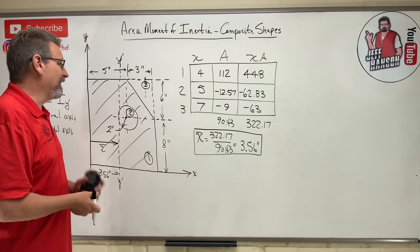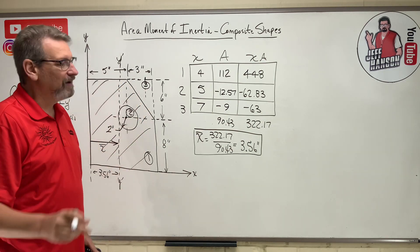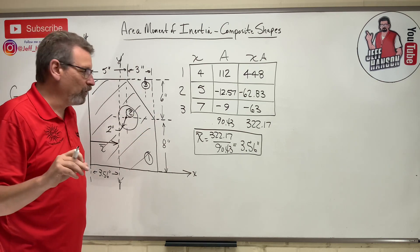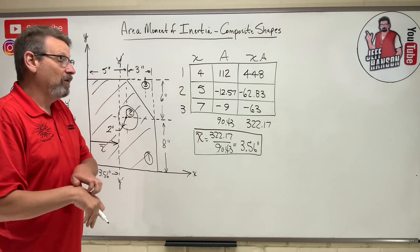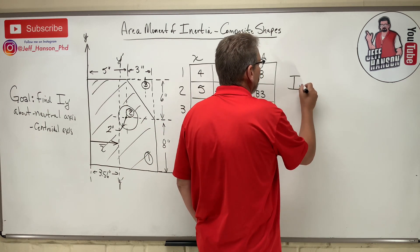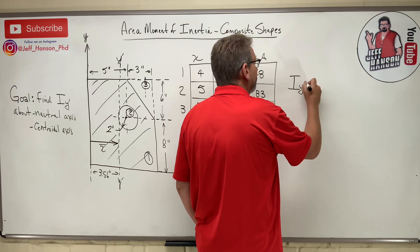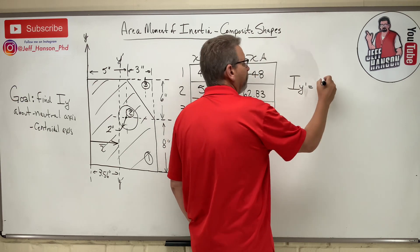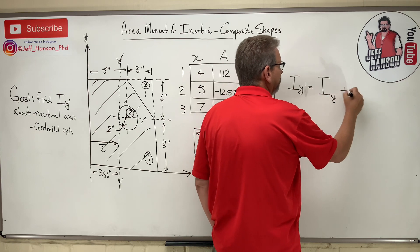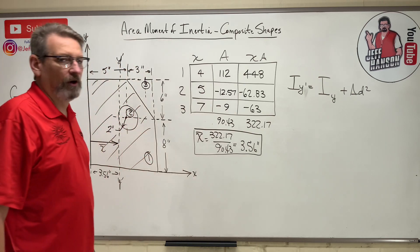Step two is finding the moment of inertia for each of the three shapes and adding them together. The one thing to be careful of is subtracting off those two shapes — I'll show you how to avoid disaster on those. We're going to use the parallel axis theorem. The parallel axis theorem states: I_y-prime equals I_y plus A·d².